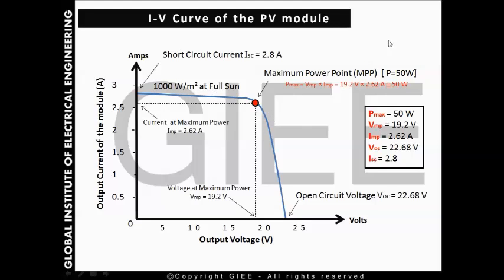So the maximum power is 50 watts at Standard Test Condition: 1000 watts per square meter, air mass 1.5, and temperature 25 degrees Celsius. The voltage at maximum power, V_MP, is 19.2 volts, shown on this point on the curve. The current at maximum power, I_MP, is 2.62 amps. The open circuit voltage of 22.68 volts is greater than V_MP, and the short circuit current of 2.8 amps is greater than I_MP.